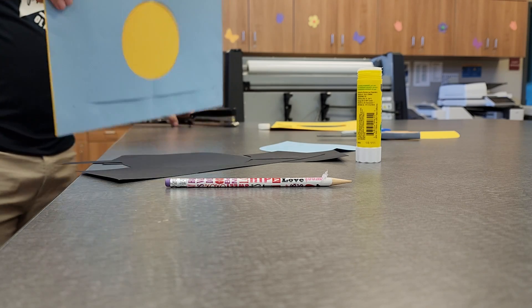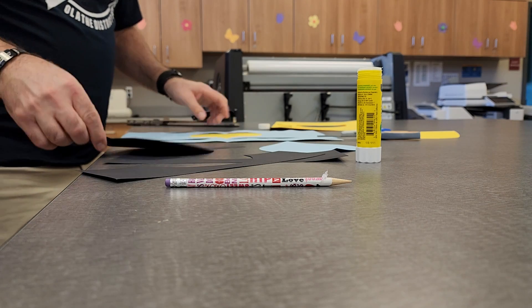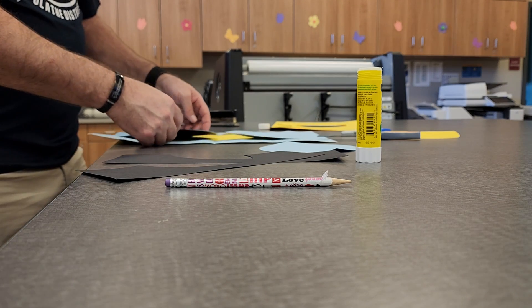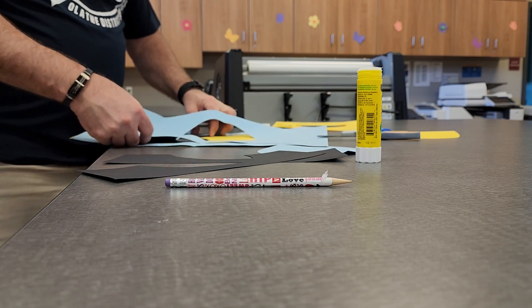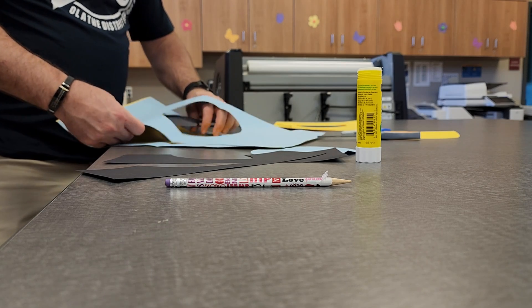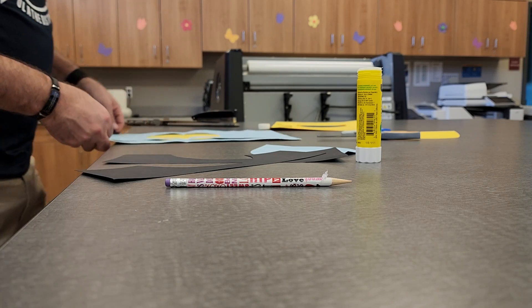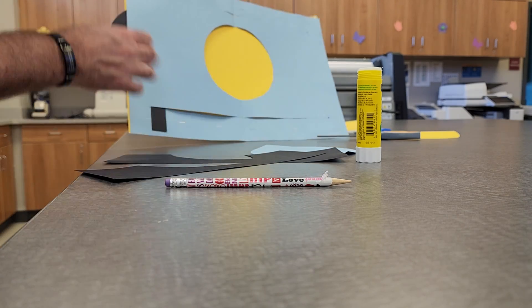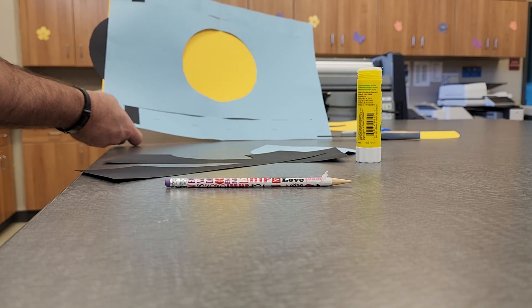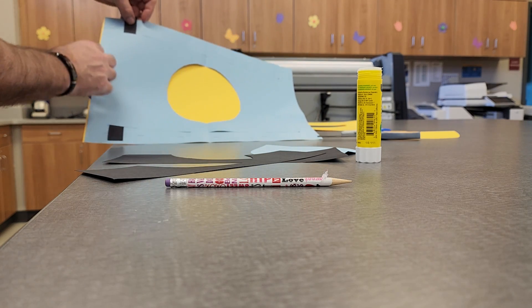So when you have that, it should look like this. Then you're going to slide your moon that looks kind of like Saturn in, put the handles on the top and the bottom. And the reason we didn't glue our side is because your moon doesn't quite always fit. And so it's going to stick out a little bit.